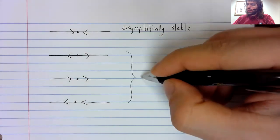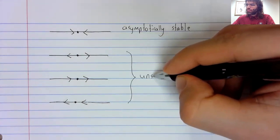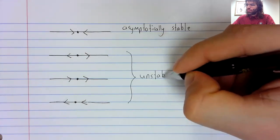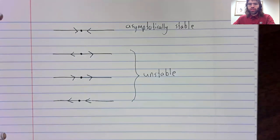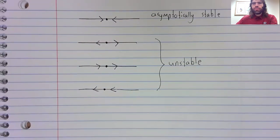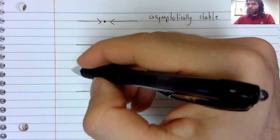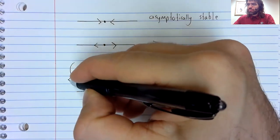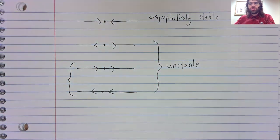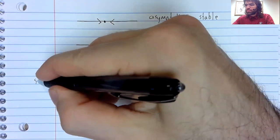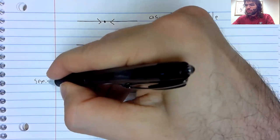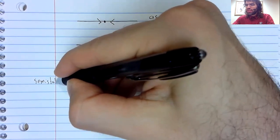Otherwise, it's unstable. But two of these unstable cases get their own name. These last two cases are called semi-stable.